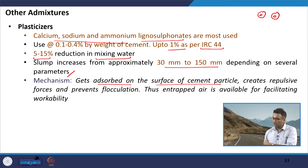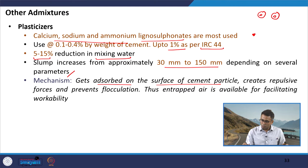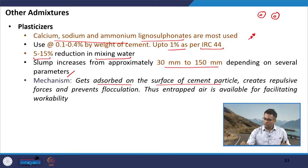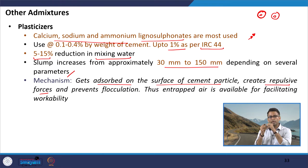Ideally, without a plasticizer, when cement is mixed with water, the small cement particles try to come close to each other and agglomerate. This increases friction, requiring more force to work with, reducing workability. Also, because they agglomerate, water cannot mobilize the entire surface properly. What plasticizers do is get adsorbed on the surface of cement particles, creating repulsive forces so the particles cannot flocculate or agglomerate, preventing flocculation.